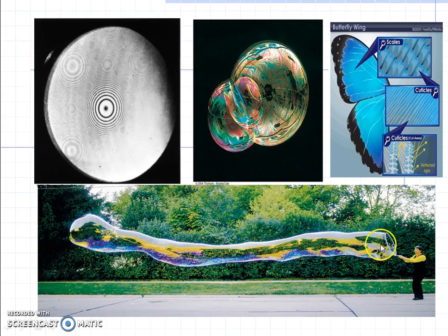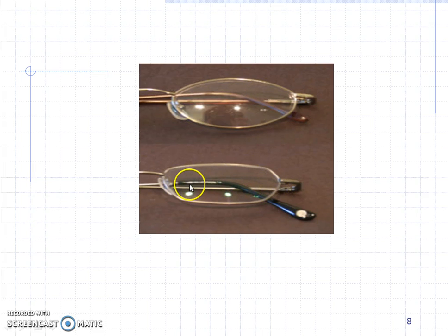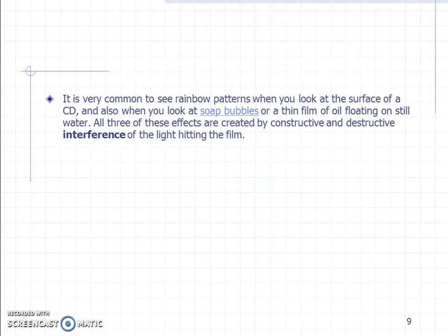The soap bubble area also exhibits different colors. This is also related to the Newton's rings setup, where you get different lens patterns — constructive and destructive patterns — because of a thin film formation when observing lenses. One lens is without a reflective coating and the other is with a reflection coating. We apply an anti-reflection coating thin film on the glass plate to avoid unnecessary light. It is very common to see a rainbow pattern when looking at the surface of oil floating on water or soap bubbles, as all these effects are created by constructive and destructive interference of light hitting the film.